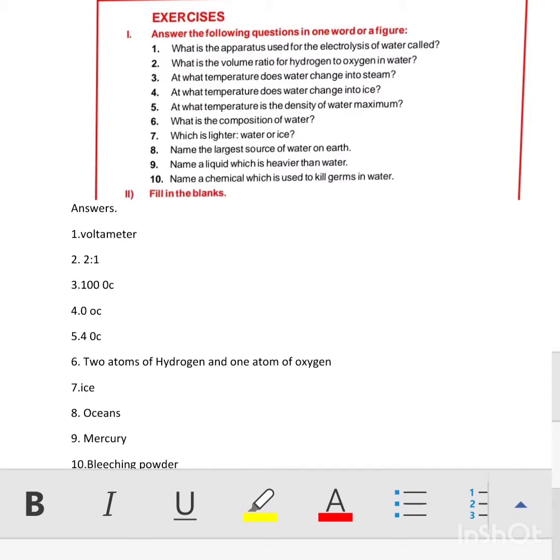Question 4: At what temperature is the density of water maximum? The temperature is 4 degrees Celsius. At 4 degrees Celsius, the density of water is maximum.